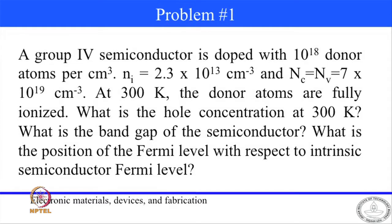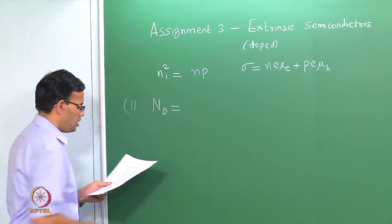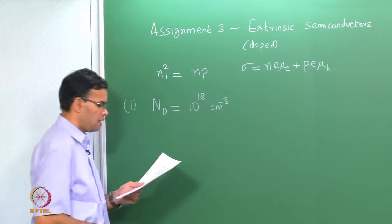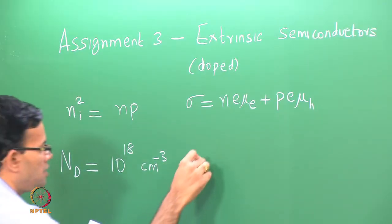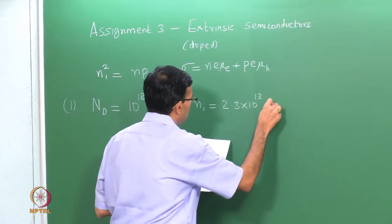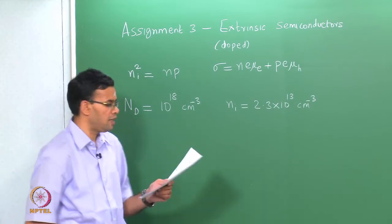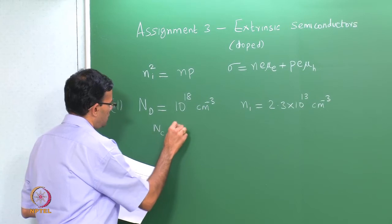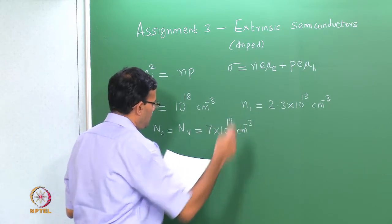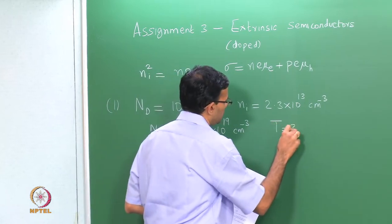Let me look at question 1. We have a group 4 semiconductor doped with donor atoms N_d. The donor atom concentration is 10^18 per centimeter cube. The intrinsic carrier concentration N_i is given as 2.3 × 10^13 per centimeter cube. The values of N_c and N_v, the effective density of states, are also given: N_c = N_v = 7 × 10^19 per centimeter cube. The sample is essentially at room temperature, T = 300 K.